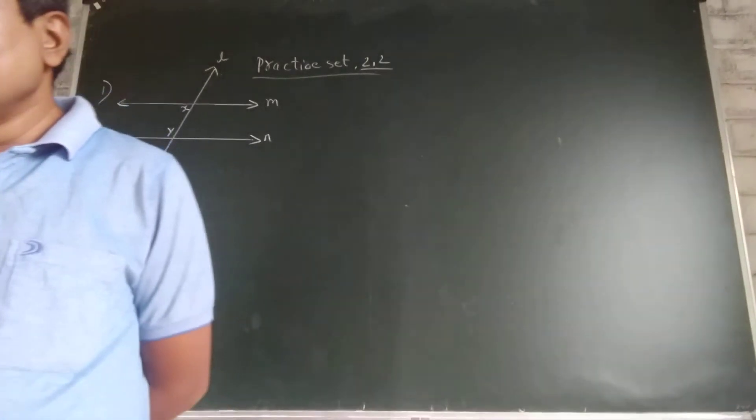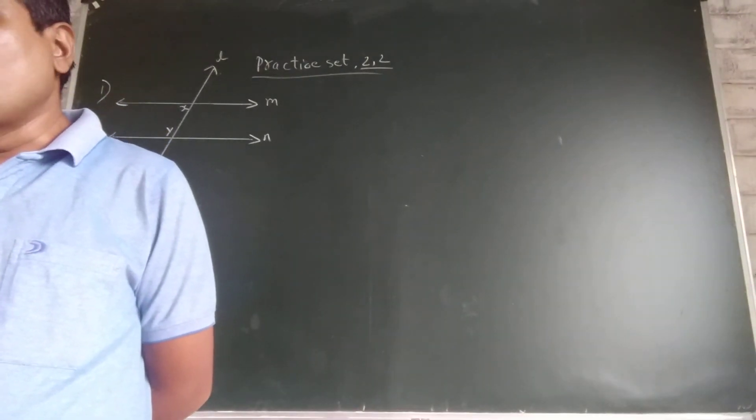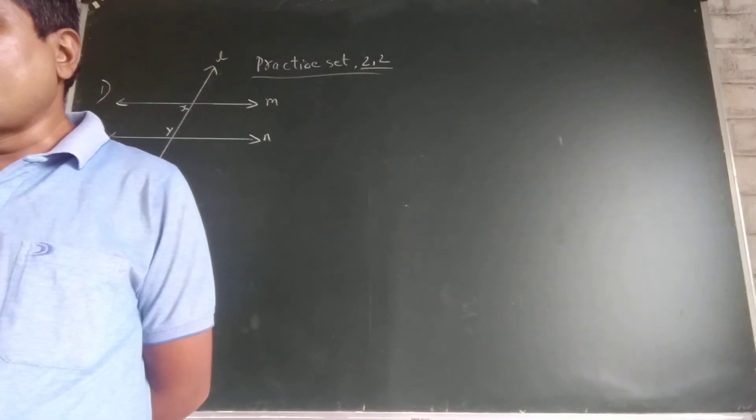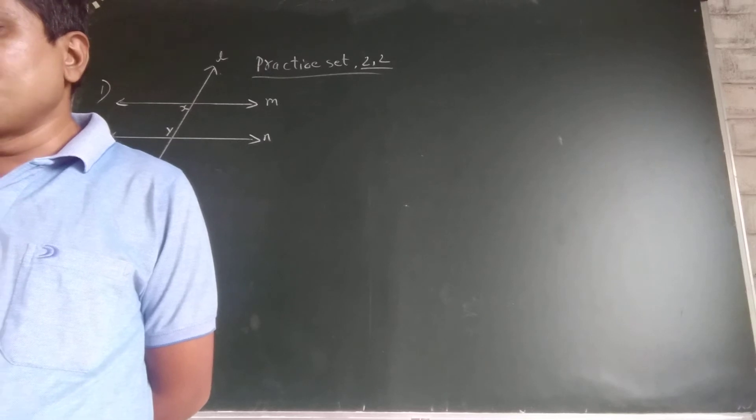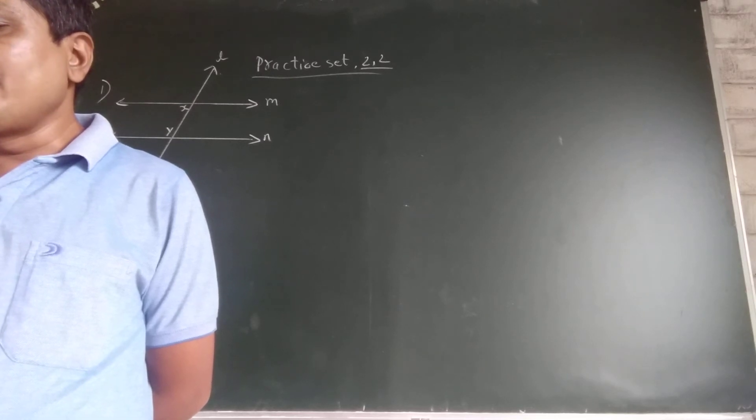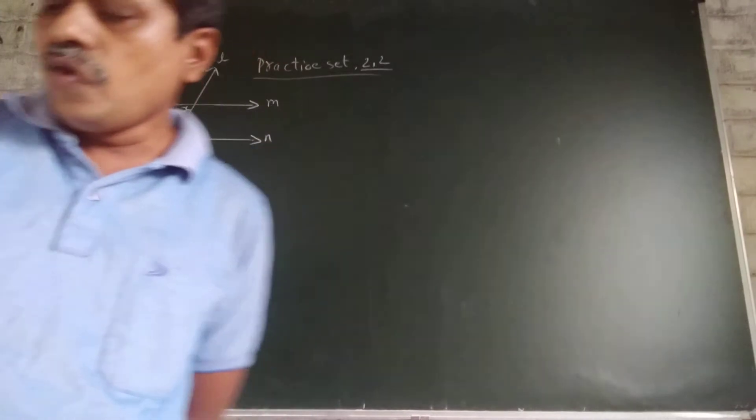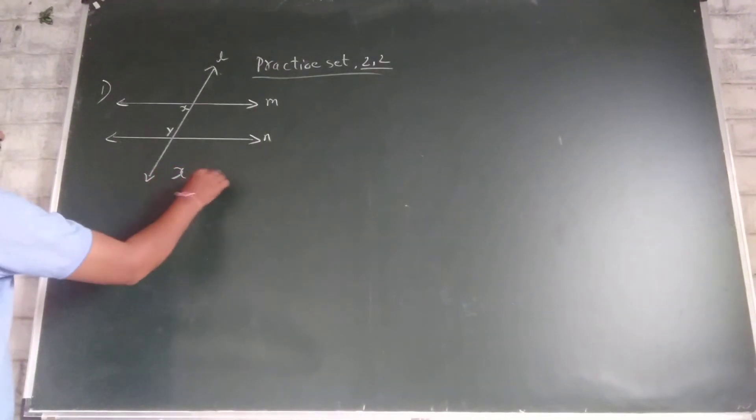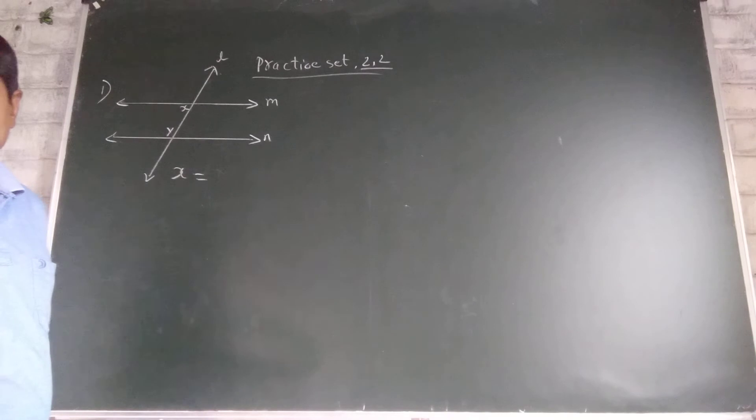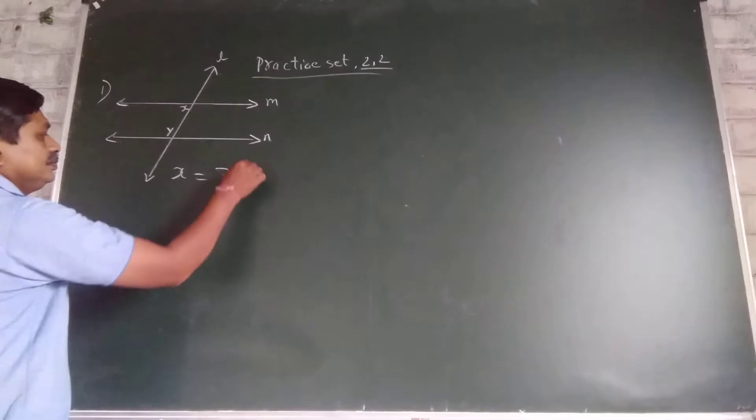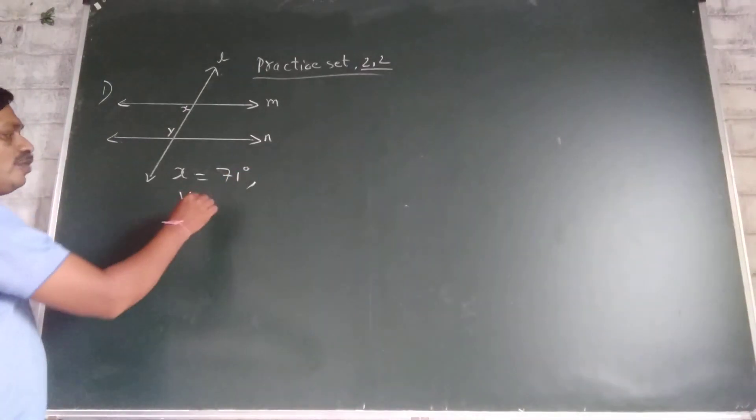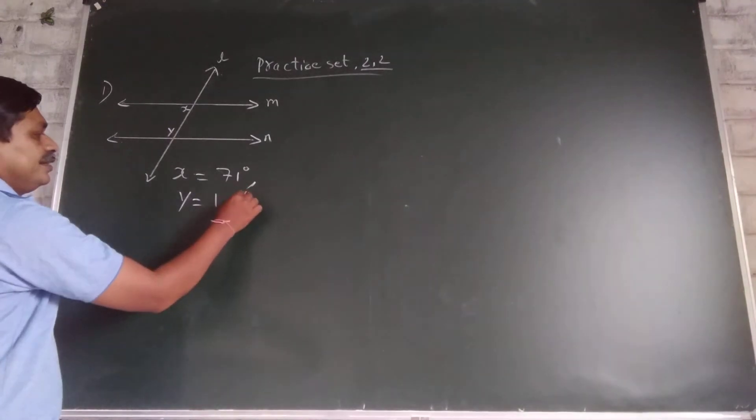First example. In figure 2.80, Y equal to 108 and X equal to 71. Are the lines M and N parallel? Justify. Now see, X is given 71 degrees and Y is given 108 degrees.